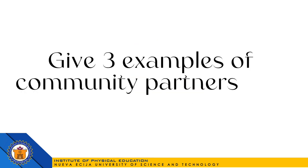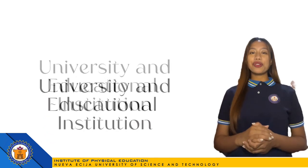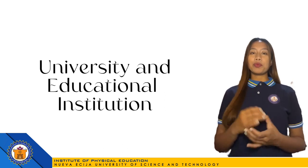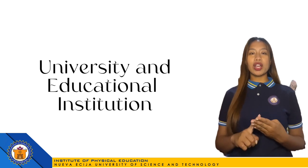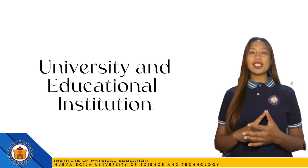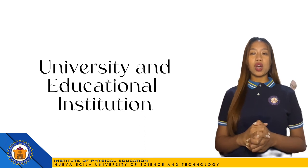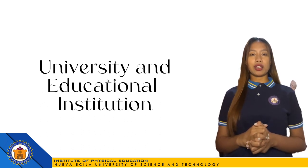Give three examples of community partners and state their importance. First is universities and educational institutions. Preschool, primary elementary school, secondary high school, and universities are examples of educational institutions where people of all ages can get an education. They also provide a wide range of learning settings and learning values.